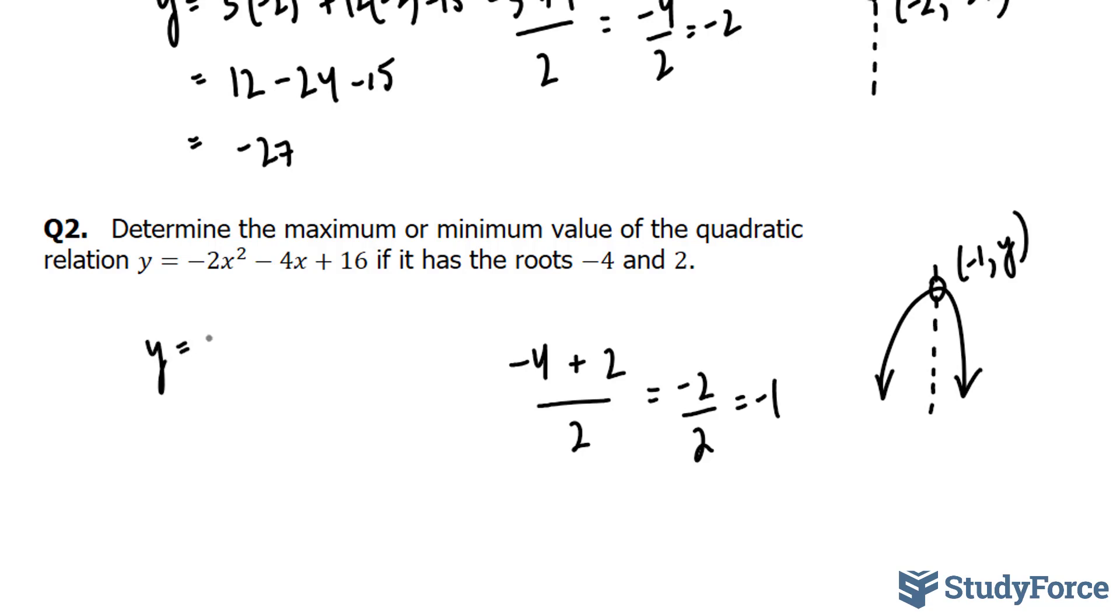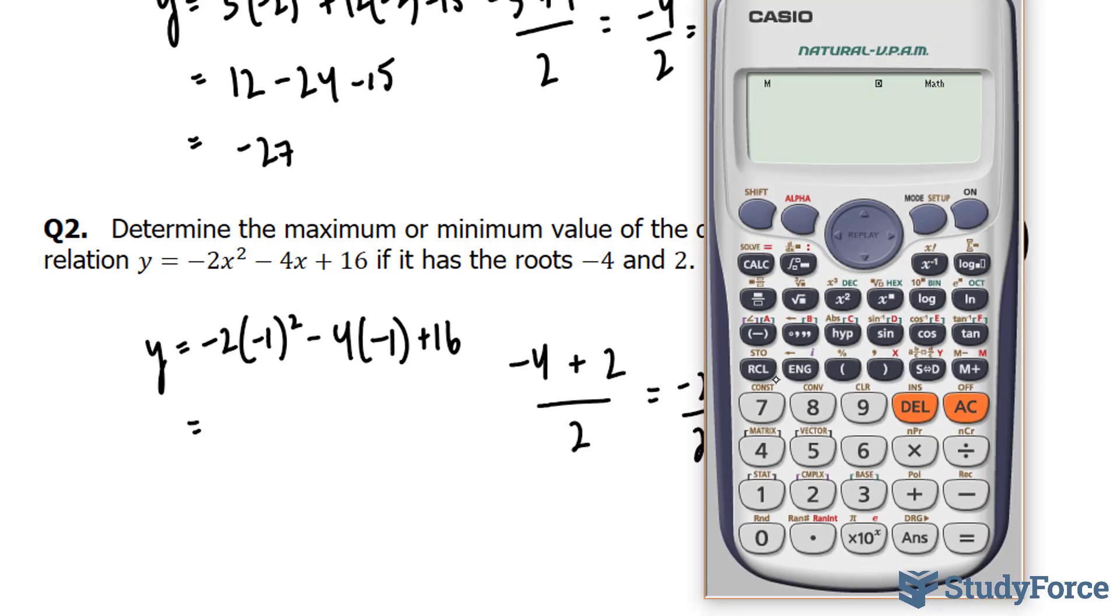y is equal to negative 2 times negative 1 squared minus 4 times negative 1 plus 16. And this time, I'll use my calculator to show how you can evaluate this. Negative 2 bracket negative 1 to the power of 2 minus 4 times negative 1, notice that it's in brackets, plus 16. And we end up with 18.